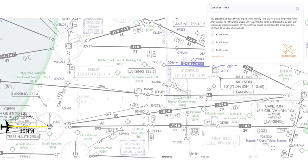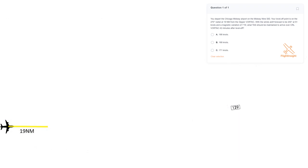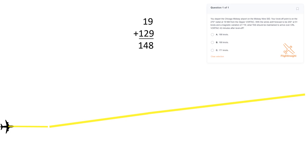We'll be flying towards CRL, the Carlton Vortac, along J554. The box symbol along J554 tells us the total distance of the airway between Gipper and Carlton is 129 miles. So if we add the 19 miles from our level off point to Gipper, and then 129 miles from there to Carlton, we get our en route distance of 148 miles.